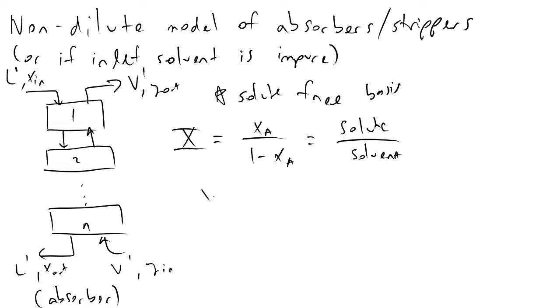And we do the same for the vapor phase mole fraction. So we will have ya divided by 1 minus ya. The capital Y variable is equal to the solute mole ratio of your absorbate divided by the solvent mole ratio of your absorbate.